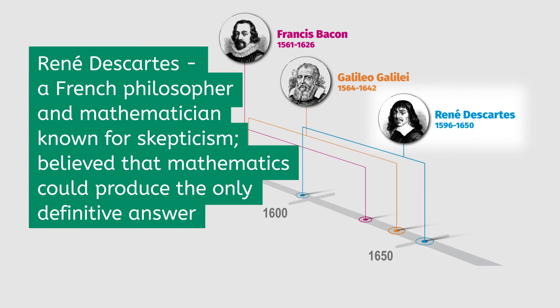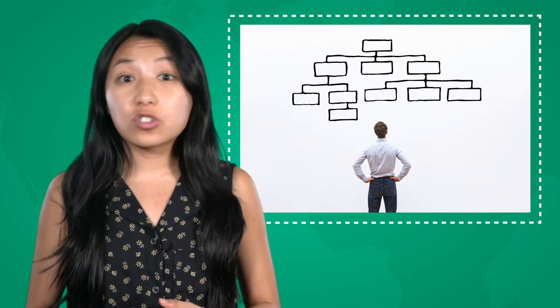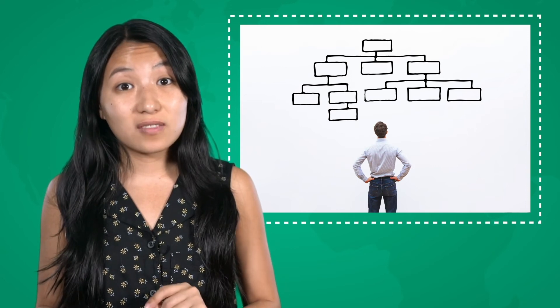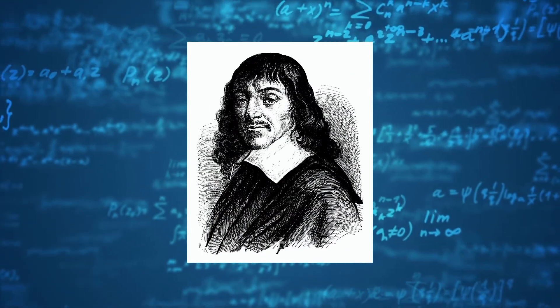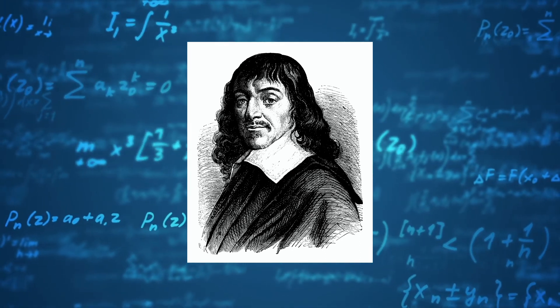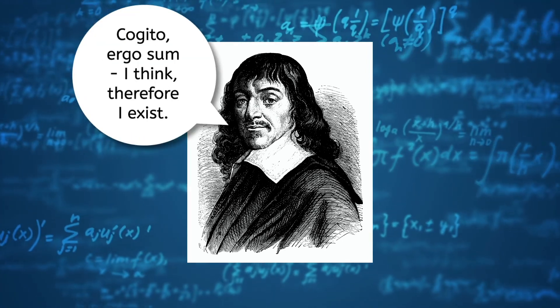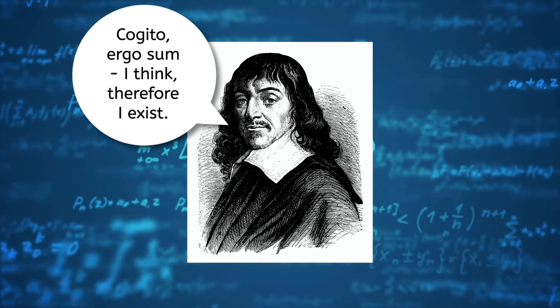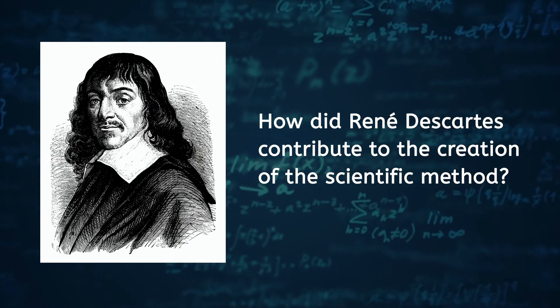René Descartes was born three decades after Galileo and Bacon. He was a French philosopher and mathematician who agreed with Bacon that modern scientists should reject antiquated assumptions about the world. Descartes, however, essentially believed human senses couldn't be trusted at all — even reaching logical conclusions based on observation wasn't enough. Flawed reasoning could lead to false logic. Descartes felt that questions could be answered, but there was only one way: math. He was pretty sure that he himself existed, saying 'Cogito ergo sum' — I think, therefore I exist. Other than that, if you couldn't prove something mathematically, there was reason to doubt it.